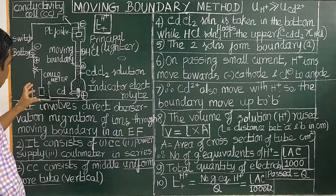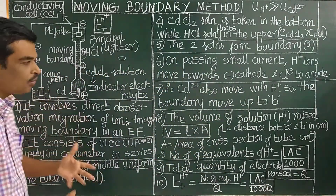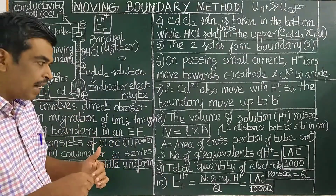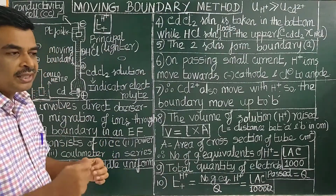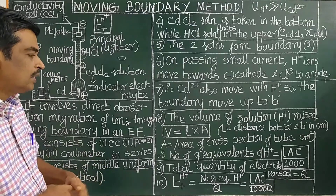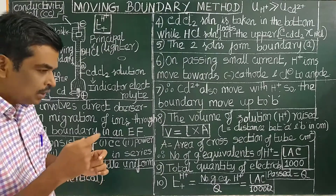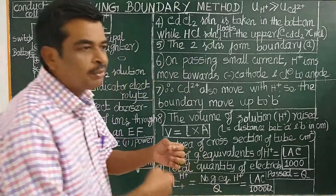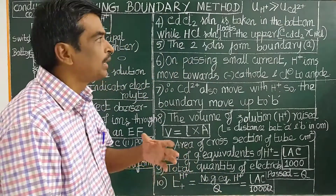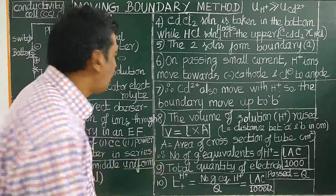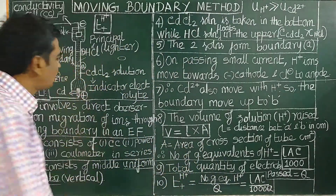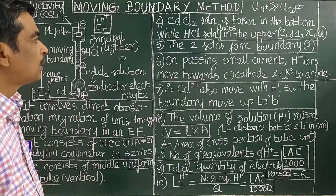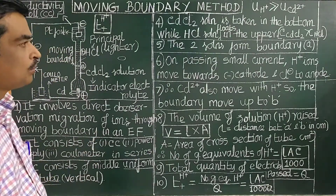From the first law of electrolysis, mass equals z·i·t, where z is the electrochemical equivalent. The number of equivalents of the ion can then be determined. Thank you for watching.